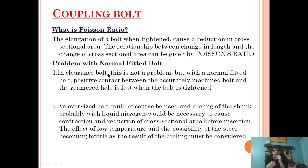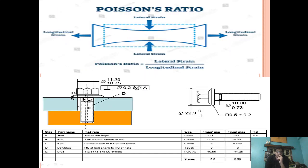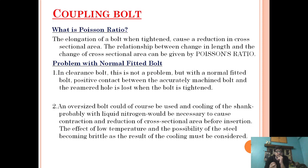What are the problems we encounter with the normal fitted bolt? With a normal fitted bolt, positive contact between the accurately machined bolt and the rim hole is lost when the bolt is tightened. As you can see, when this normal fitted bolt is tightened, the positive contact is lost. It is also impossible to accurately machine a bolt to perfection, so over a period of time, fretting will ultimately cause a problem.